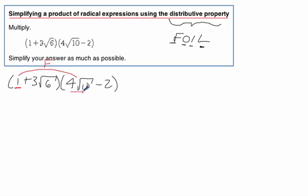What do we get when we multiply 1 times 4 radical 10? Well, that's 4 radical 10.